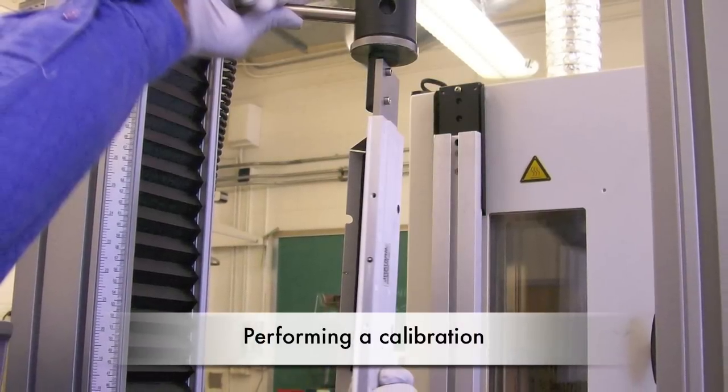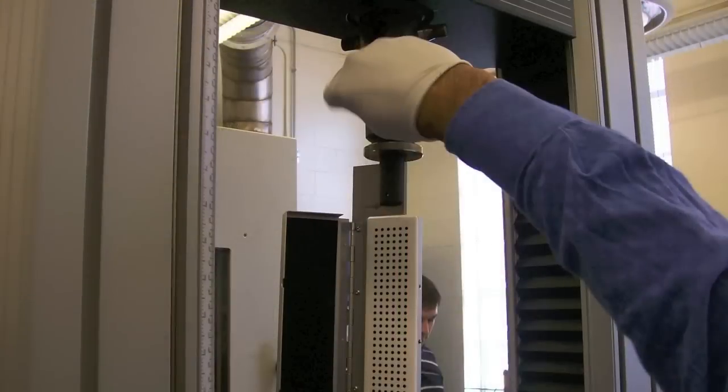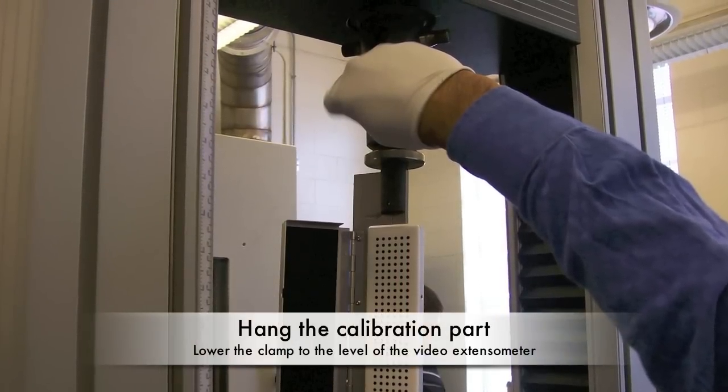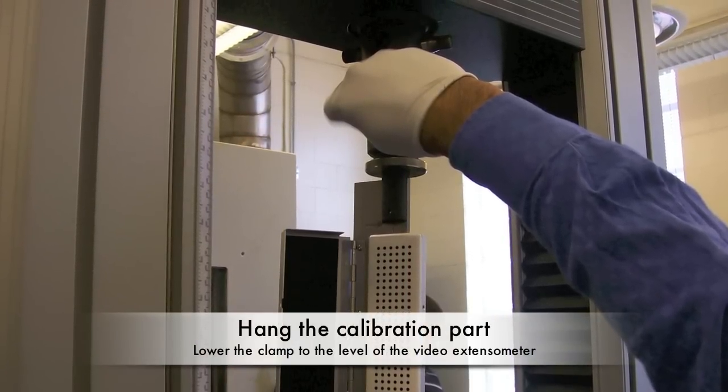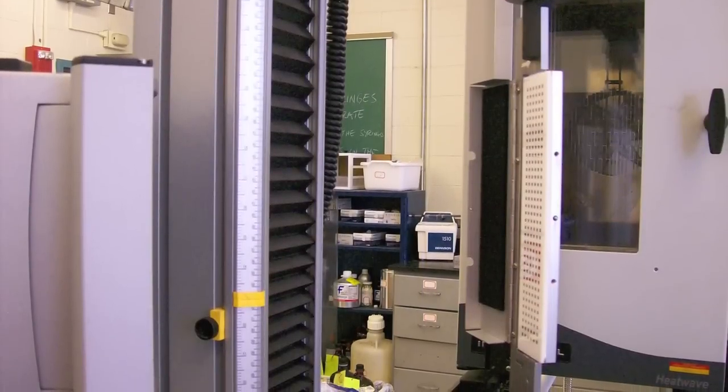For the strain to be correctly monitored, a calibration must be performed every so often. To do this, attach the calibration piece, found in a black box, to the upper holder. Lower the top clamp until the piece is about level with the video extensometer.